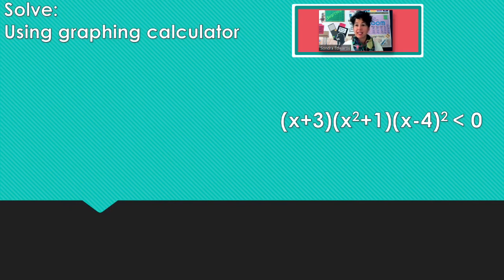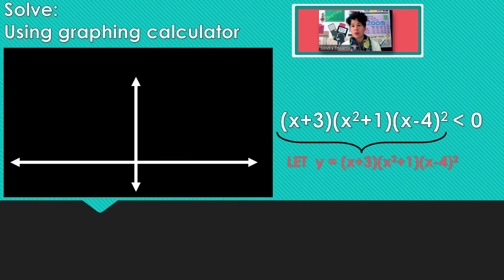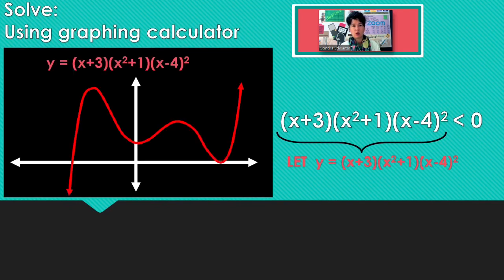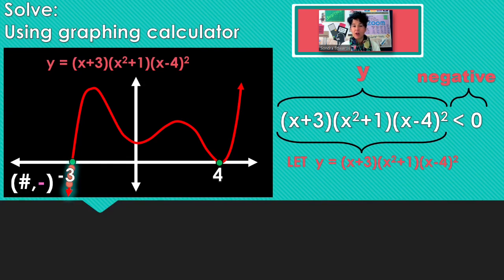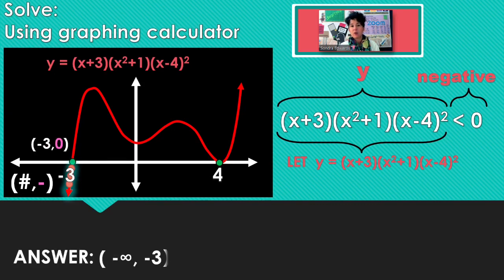Now I have less than 0. When we are less than 0, we are looking for y's that are negative. The only place on this graph where the points have a negative y-part is before negative 3. All of these other ones have y-coordinates that are 0 or positive.